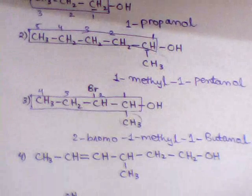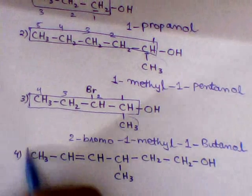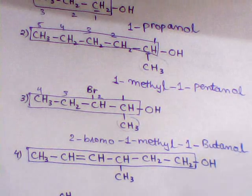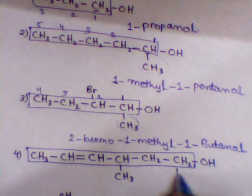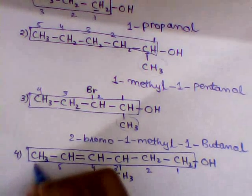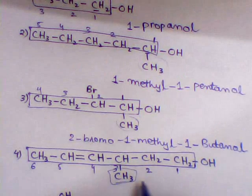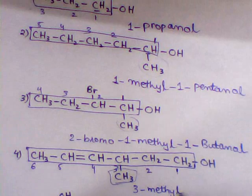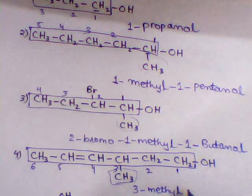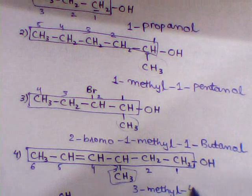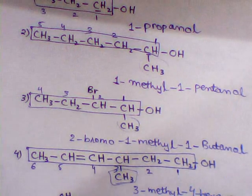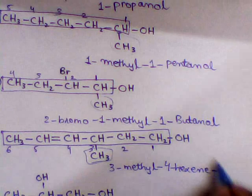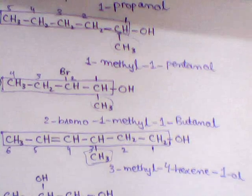In example 4, we have an alkene as well. We select the longest chain first. Priority should be given to the alcohol group for numbering. At position 3 we have a branch, so we write the number and name of the branch first: 3-methyl. At position 4 we have a hexene, which is the alkene. And at position 1 we have 'ol'. So this is the name of this compound.